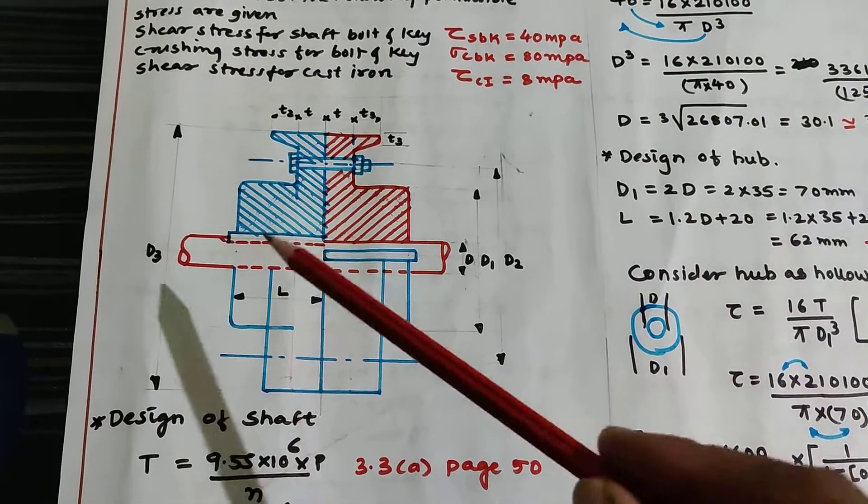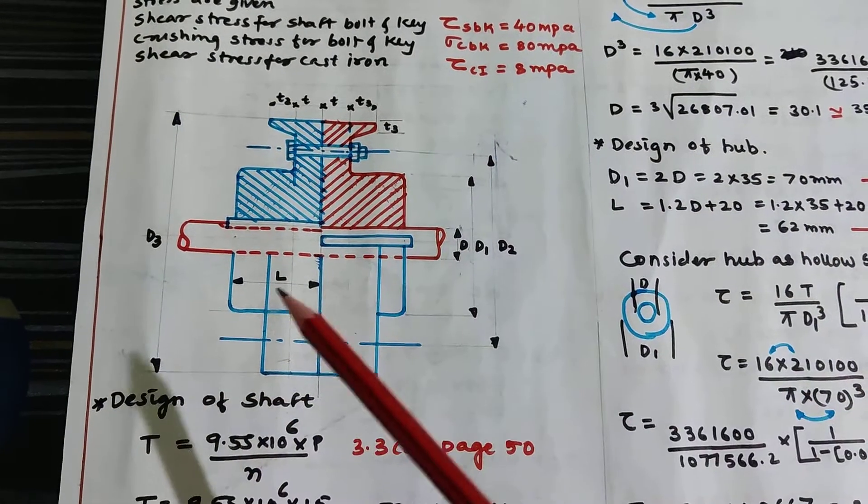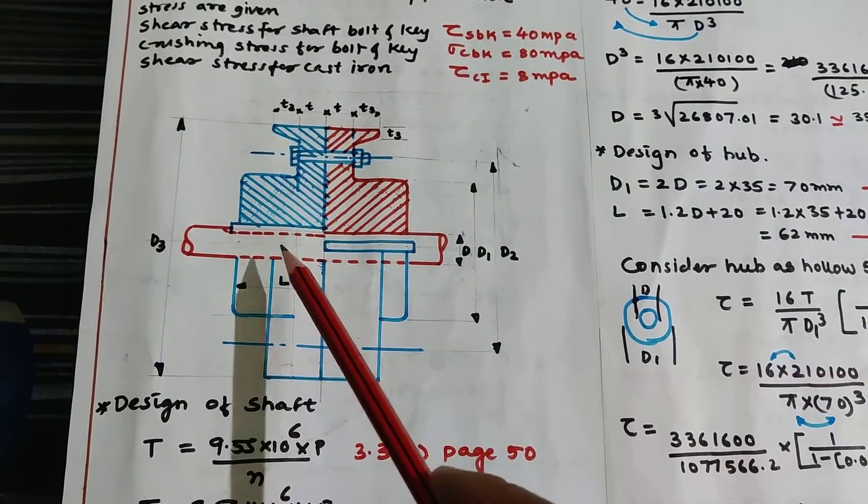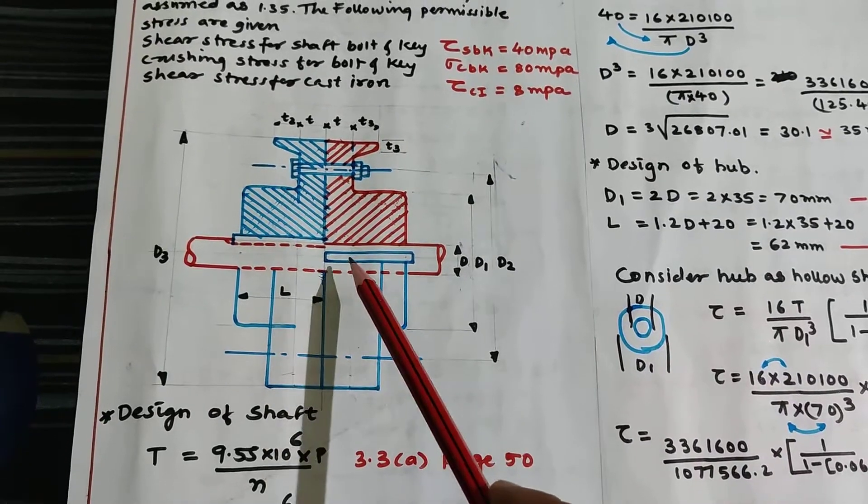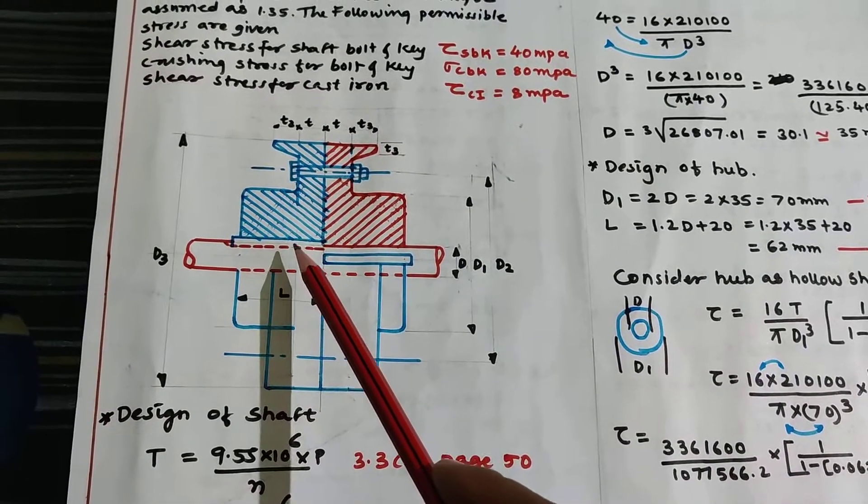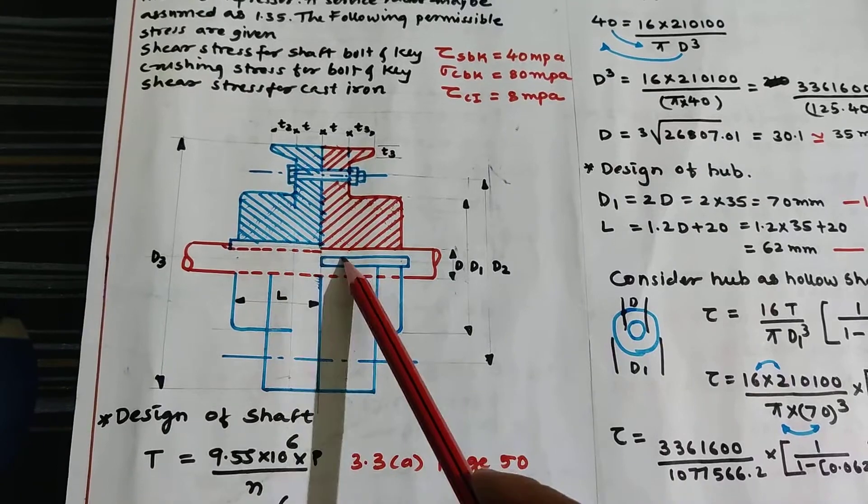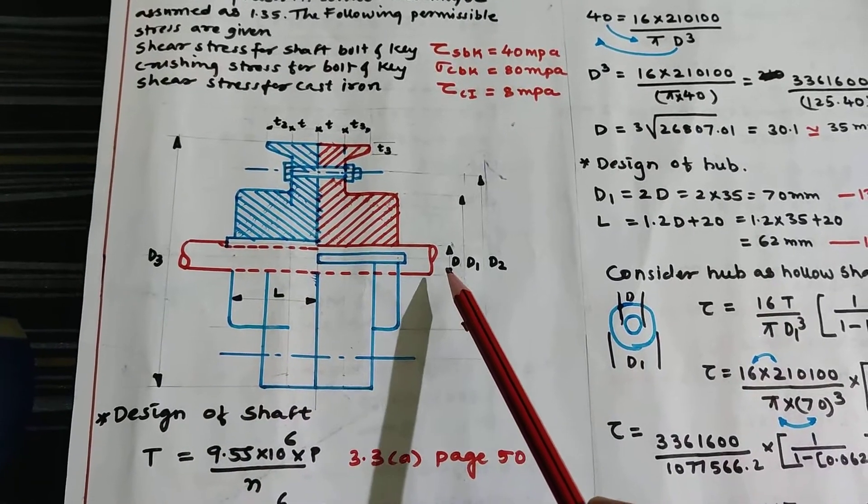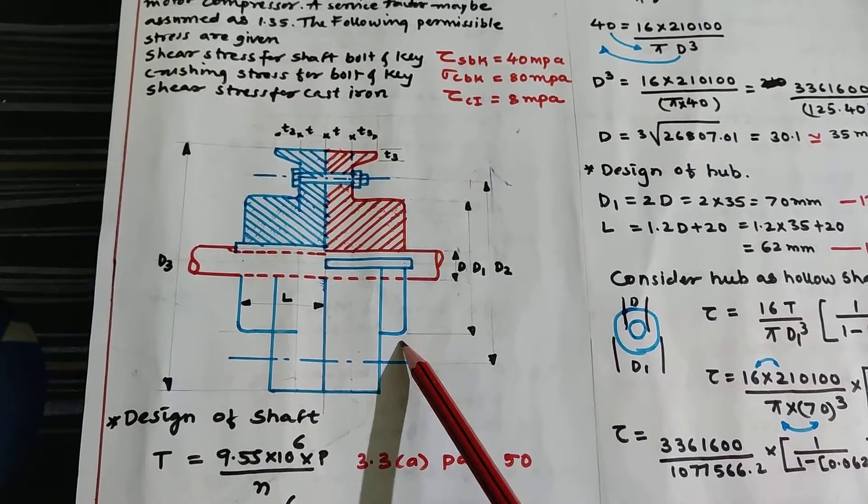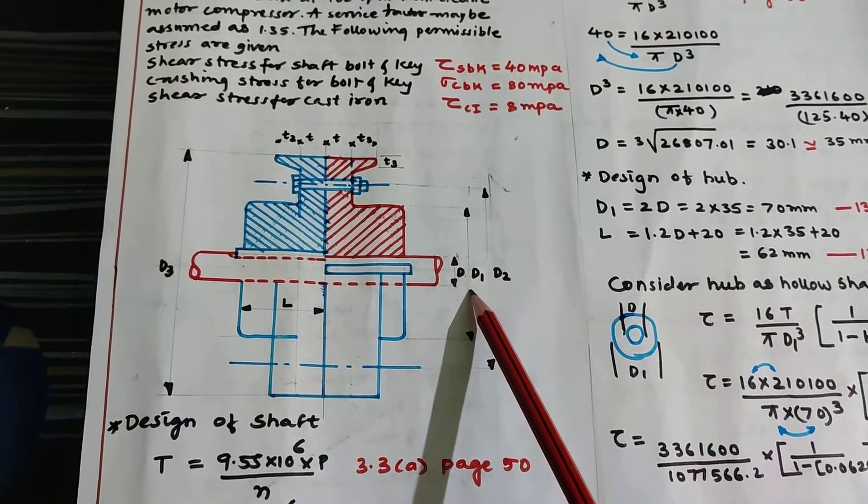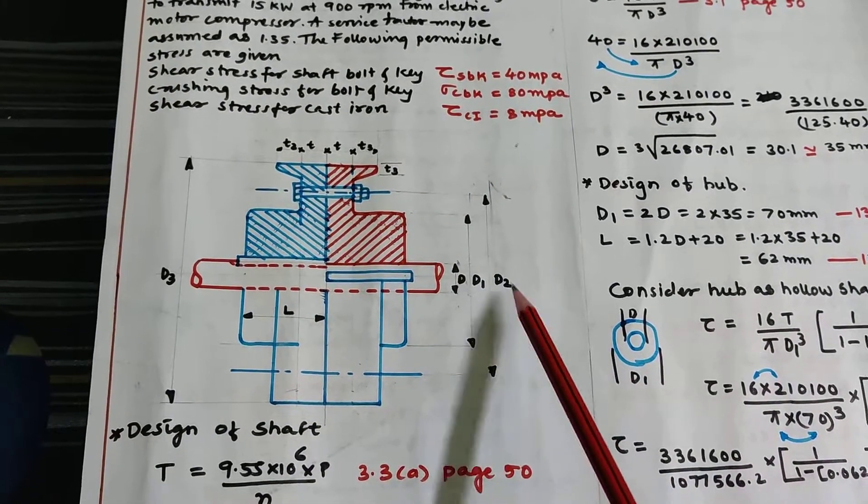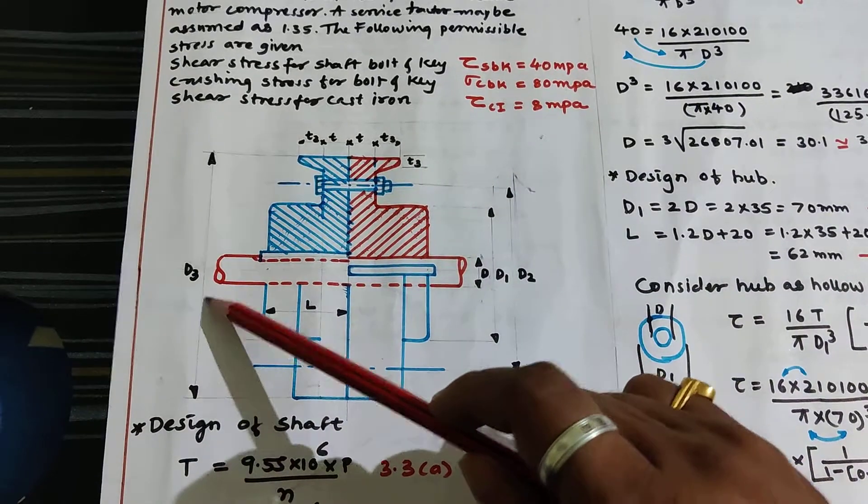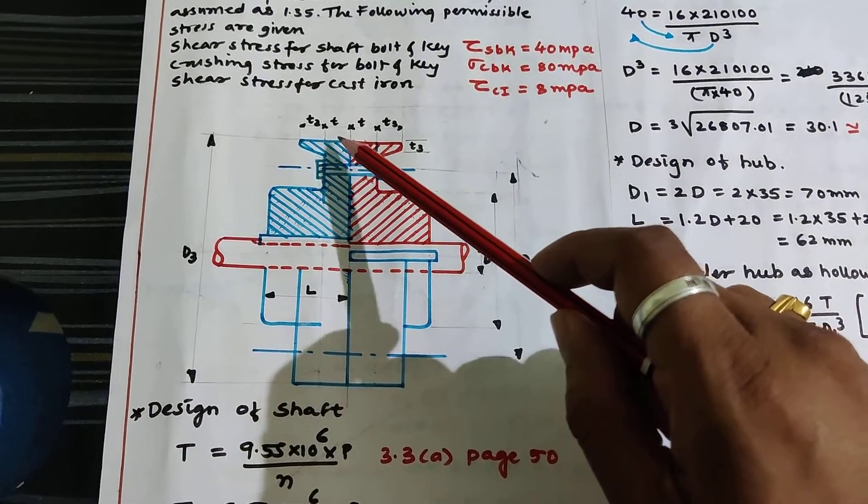Now let's have a look on the diagram. This is the first shaft, this is the second shaft, which are attached to the flange by using key. Shaft diameter is denoted by D, hub diameter by D1, pitch circle diameter as D2 and outer diameter of the flange as D3.